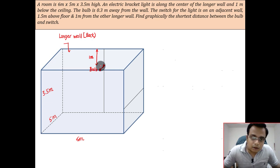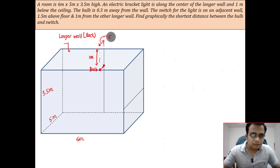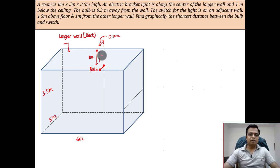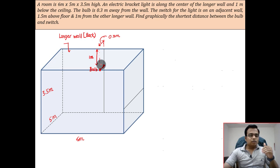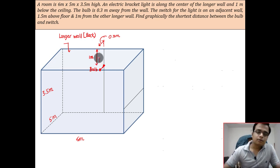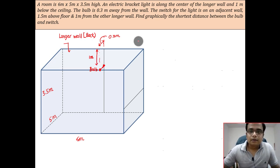From the top, when you visualize this, it would appear as if the bulb is 0.3 meters away. This distance can only be seen from the top. From the front it would appear that the bulb is one meter below the ceiling, right at the center. But from the top, the bulb appears 0.3 meters in front of the back wall.